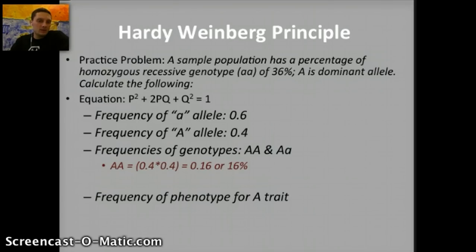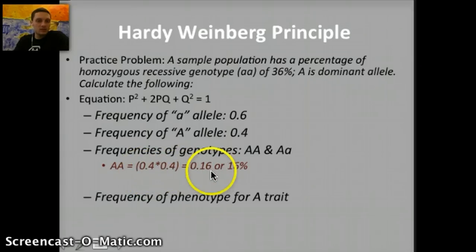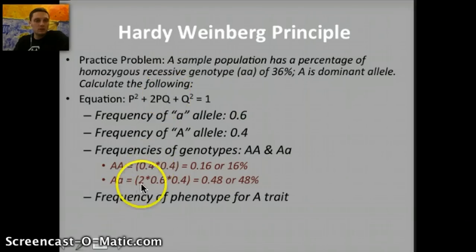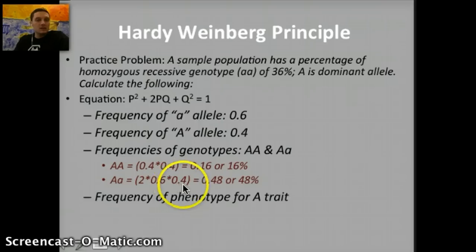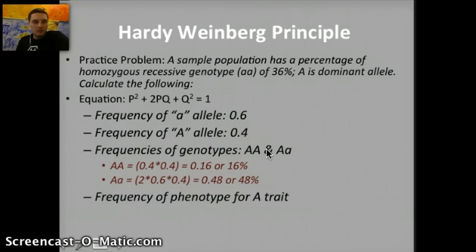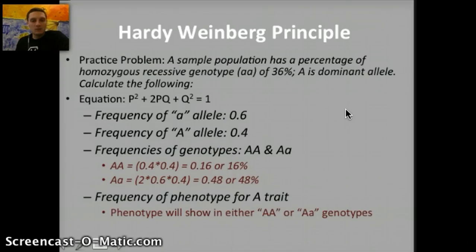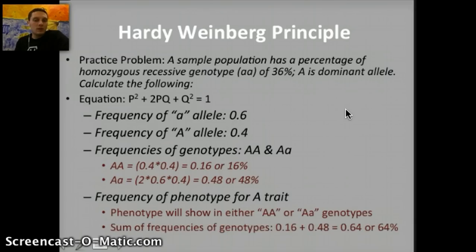For the frequency of homozygous dominant — AA — we take the dominant allele frequency and multiply it by itself: 0.4 × 0.4 = 0.16, or 16%. For heterozygous, we use 2PQ: 2 × 0.6 × 0.4 = 0.48, or 48%. To calculate the overall frequency of the dominant A phenotype — which includes both homozygous dominant and heterozygous forms — we add 0.16 plus 0.48 to get an overall percent of 64%. So 64% of the population is showing the dominant trait.